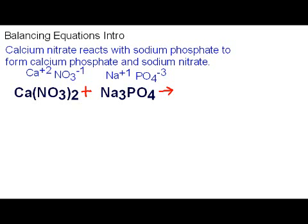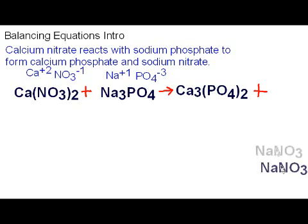Now on the other side we're going to have calcium phosphate. That will be Ca3(PO4)2. And since sodium is plus one and nitrate is minus one that formula is NaNO3.